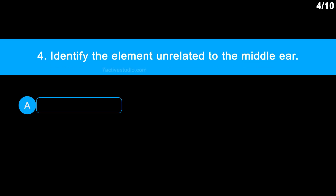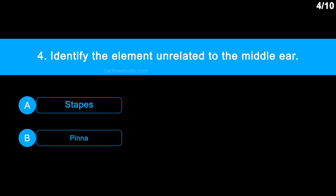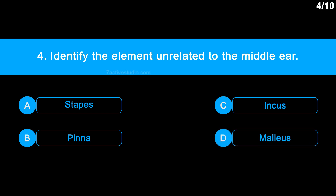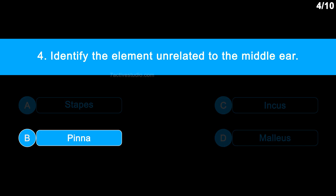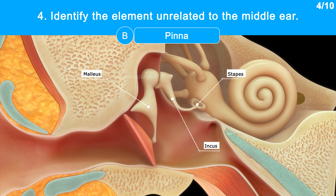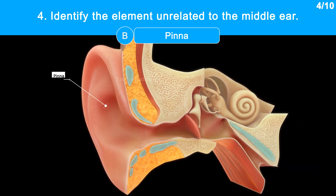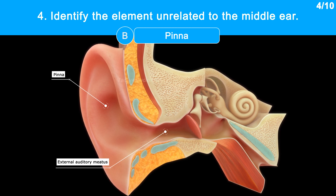Question No. 4: Identify the element unrelated to the middle ear. Option A: Stapes. Option B: Pinna. Option C: Incus. Option D: Malleus. The correct answer is Option B: Pinna. The malleus, incus, and stapes are the three tiny bones called ear ossicles that make up the middle ear. The pinna and external auditory meatus make up the external ear.